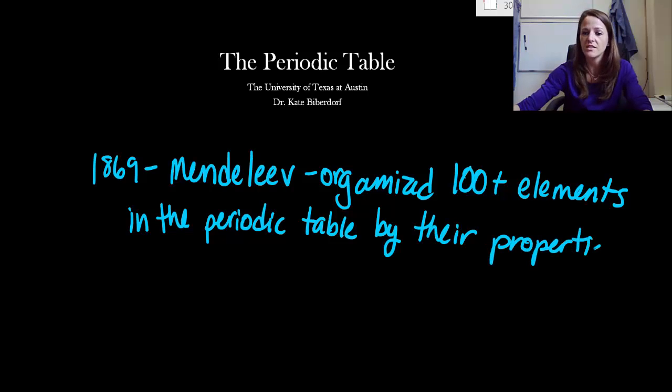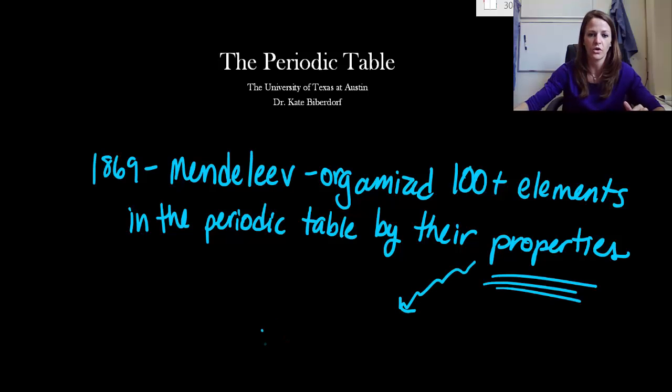He decided it didn't matter what color things were. It didn't matter if it was a solid, a liquid, or a gas. What mattered were their properties. How do these elements actually operate in nature? So I'm going to extend a little bit onto that and say the phrase valence electrons.